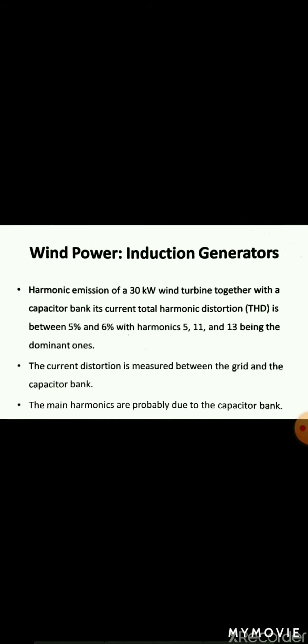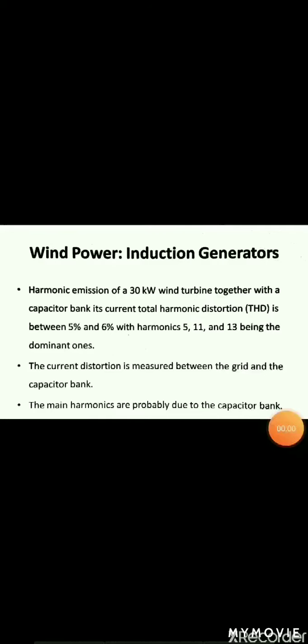Next is wind power, that is induction generator. Research has been already taken in induction generators. As per the research, the measurements show a 30 kilowatt wind turbine together with a capacitor bank. The current total harmonic distortion will be between 5% and 6%, with harmonics 5th, 11th and 13th being the dominant ones.